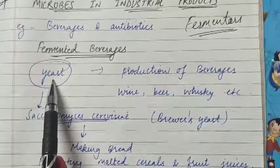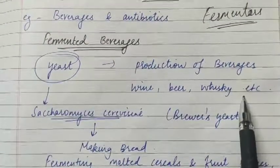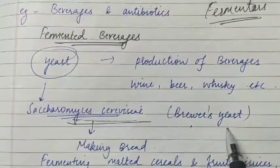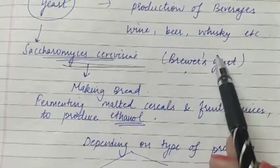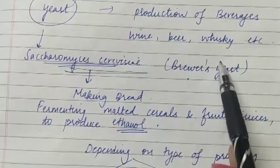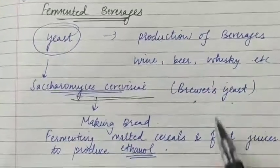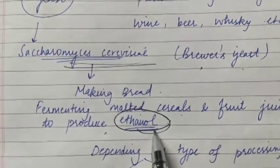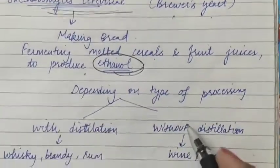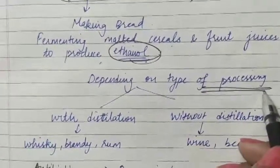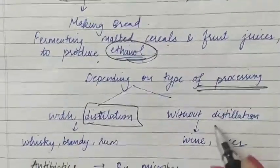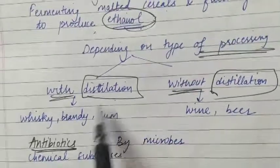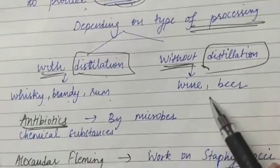Yeast is used for a lot of beverages like wine, beer, whiskey, brandy, rum, etc. The same organism, Saccharomyces cerevisiae, also called Brewer's yeast, is used. Many cereals and fruit juices are malted and fermented in fermenters to produce ethanol. Fermentation can be of two types: with distillation and without distillation. With distillation we get whiskey, brandy, and rum; without distillation we get wine and beer.